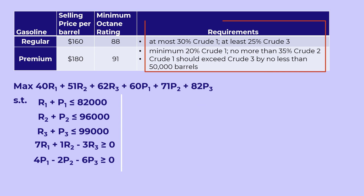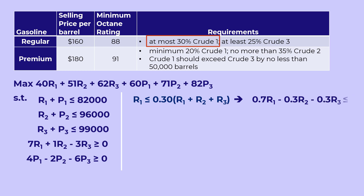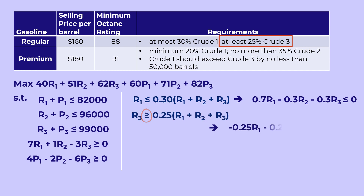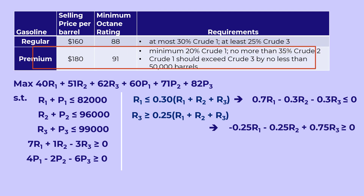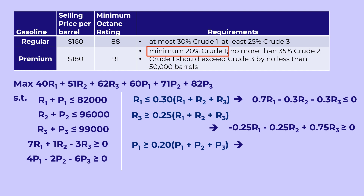Next we examine the product requirements. At most 30% crude 1 in regular implies crude 1 in regular should be no more than 30% of regular, and that can be rewritten with constants on the right for software solution purposes. At least 25% crude 3 in regular can be written similarly with a greater than or equal sign, and that is rewritten accordingly. For premium, minimum 20% crude 1 means that crude 1 in premium should be at least 20% of premium, which can be rewritten as shown.